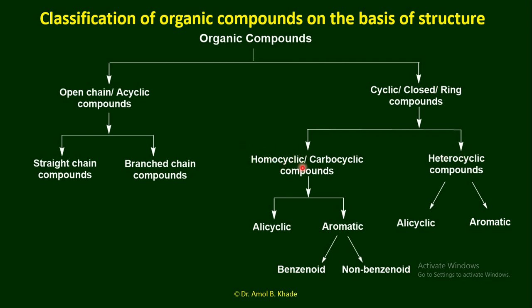In homocyclic compounds, the ring structure is made up entirely of carbon atoms. For example, benzene has six carbon atoms — homo means same, so similar atoms are present inside the ring. We refer it as homocyclic or carbocyclic. If any atom other than carbon is present in the ring structure, that is heterocyclic — hetero means different. So if any atom other than carbon is present in the ring, those are heterocyclic compounds.